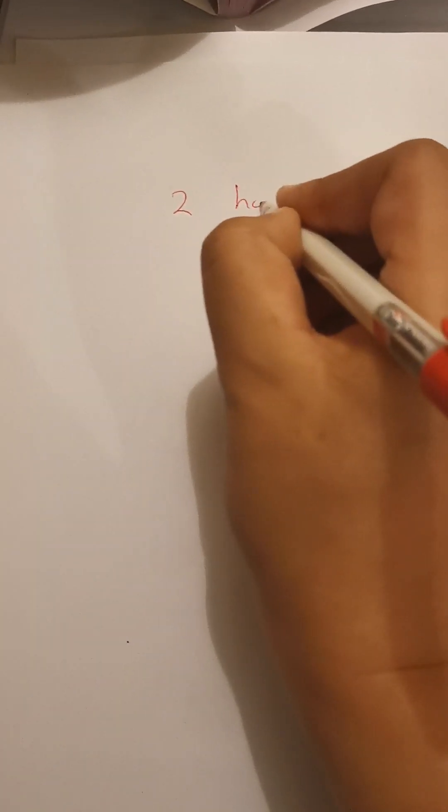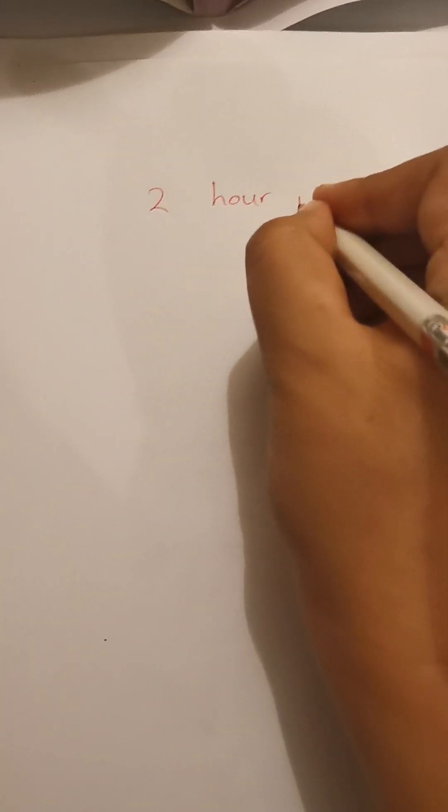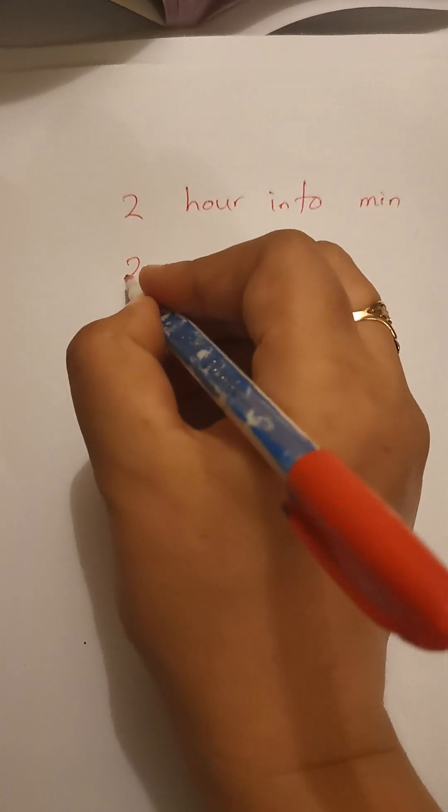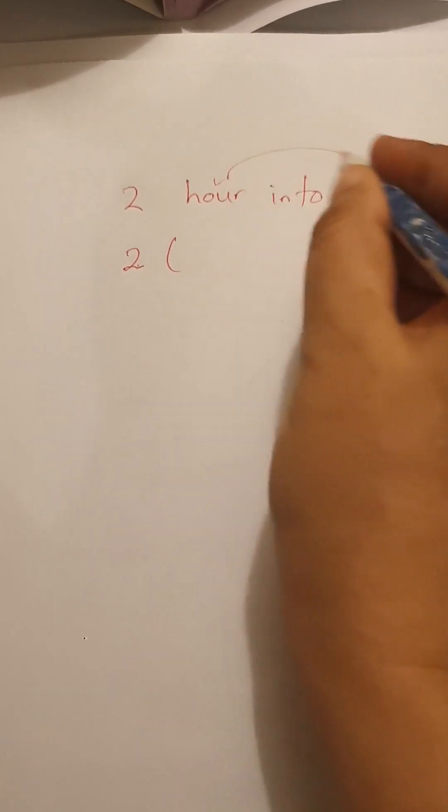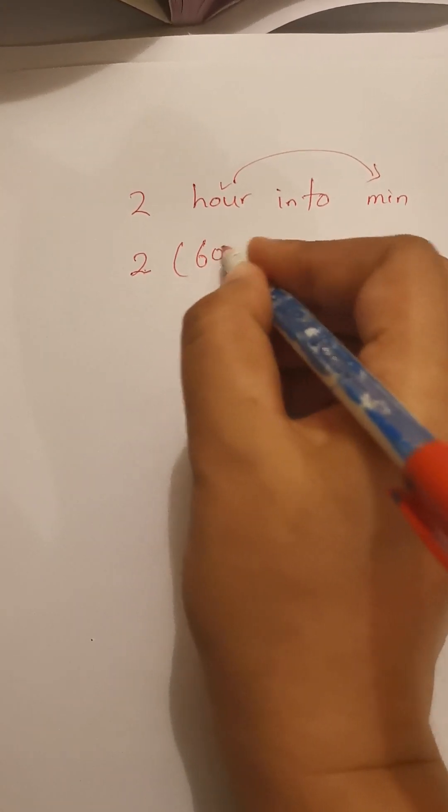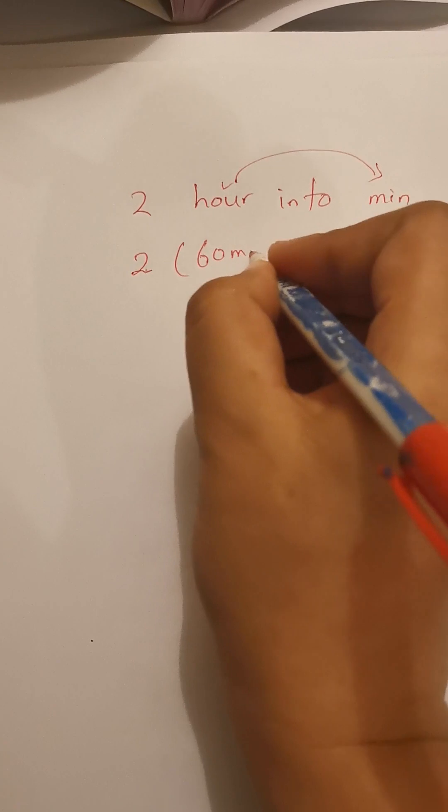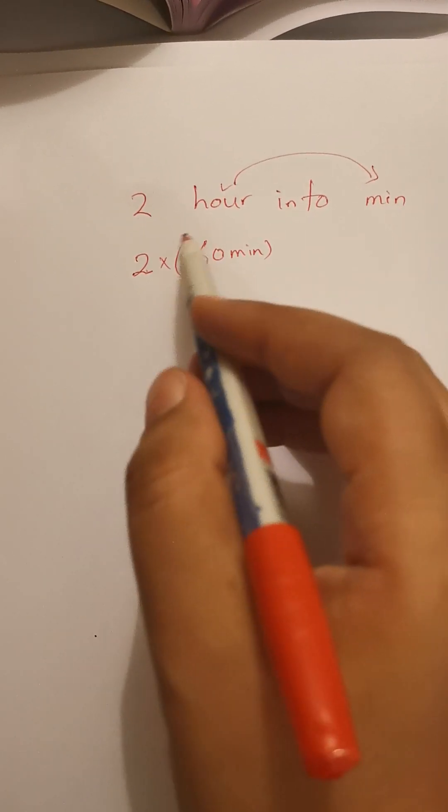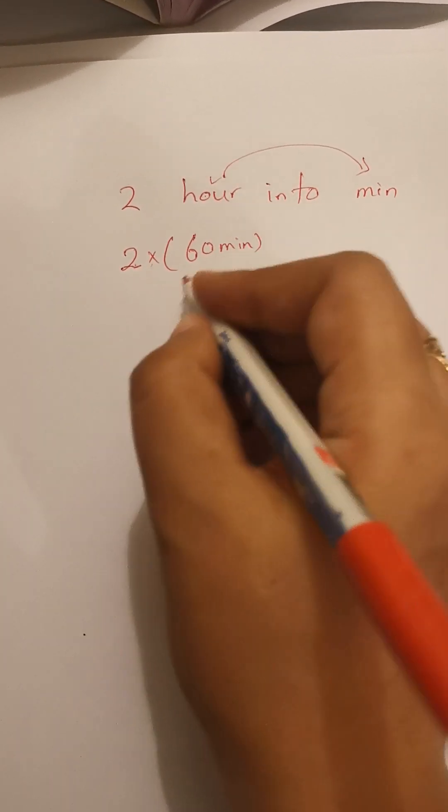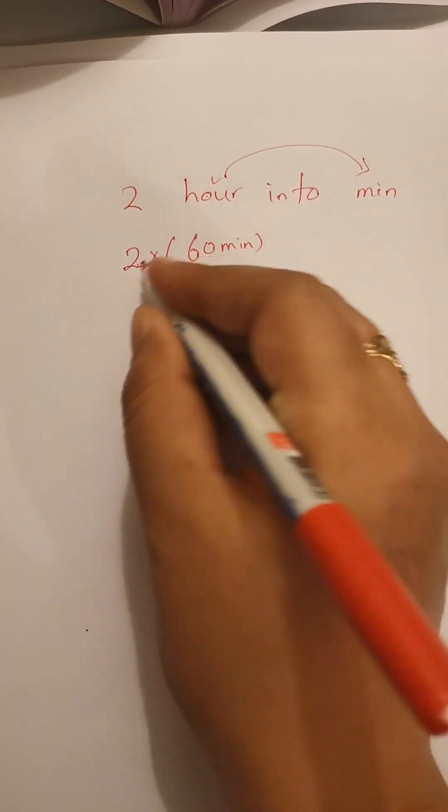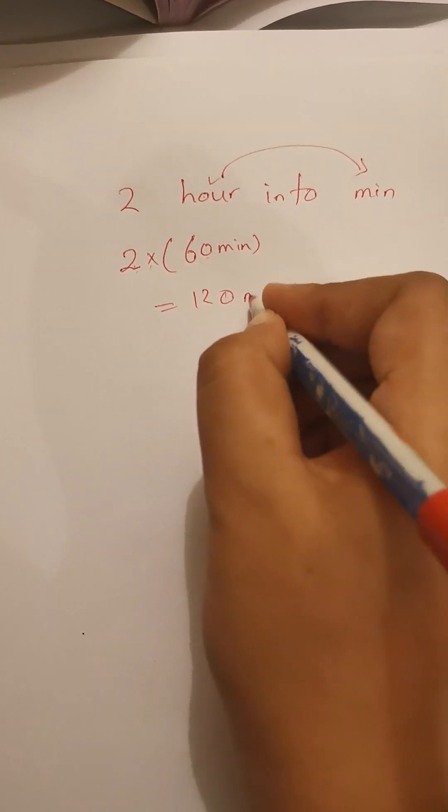Like, we have to change 2 hours into minutes. So we write 2, then - how many minutes in an hour? 60 minutes. So we are going to multiply because from big to small we multiply. So 2 times 60 is 120. In 2 hours you have 120 minutes.